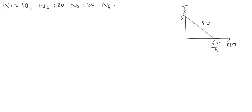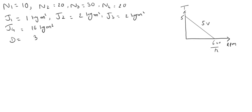and N4 equals 20. Inertias are given as J1 equals 1 kg m², J2 equals 2 kg m², J3 equals 2 kg m², and J4 equals 16 kg m². Here, the friction coefficient is given as 32 Nm second per radian.